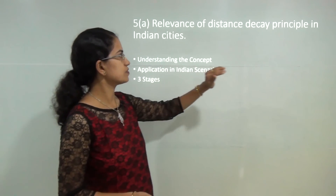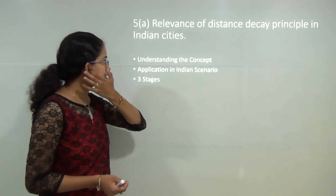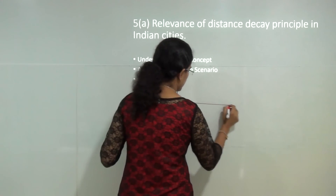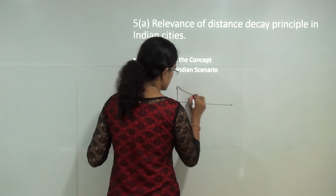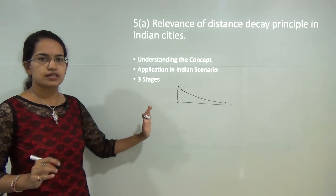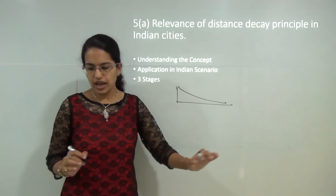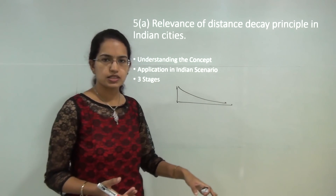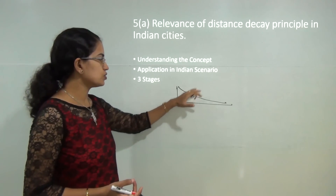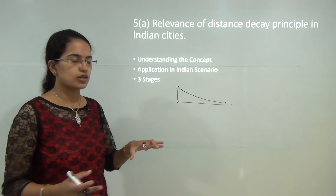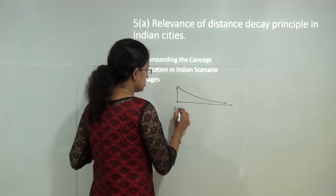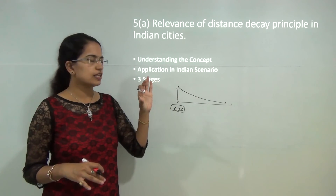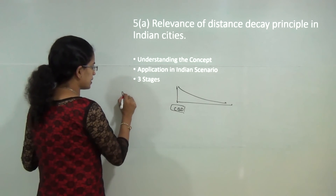The first question talks about the relevance of the distance decay principle in Indian cities. This question directly asks about the concept of distance decay, which states that as you move away from the city centre, as distance increases, the effect decreases. The population is maximum at the core and decreases as you move outward. This is applicable in most Indian metropolitan cities. It focuses on three stages, the first being metropolitan dominance.